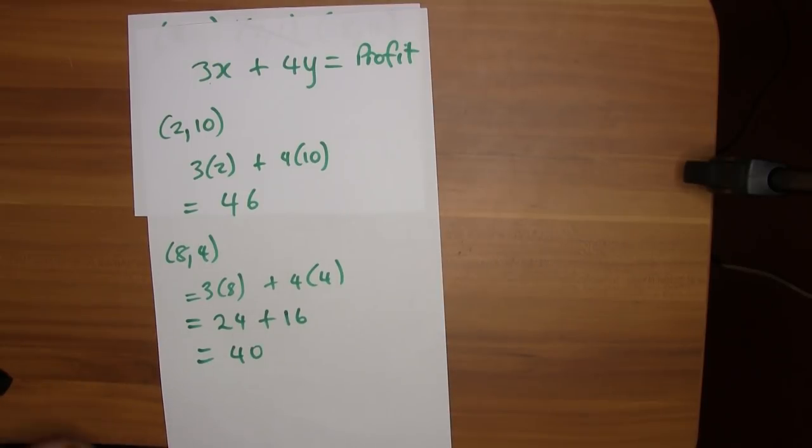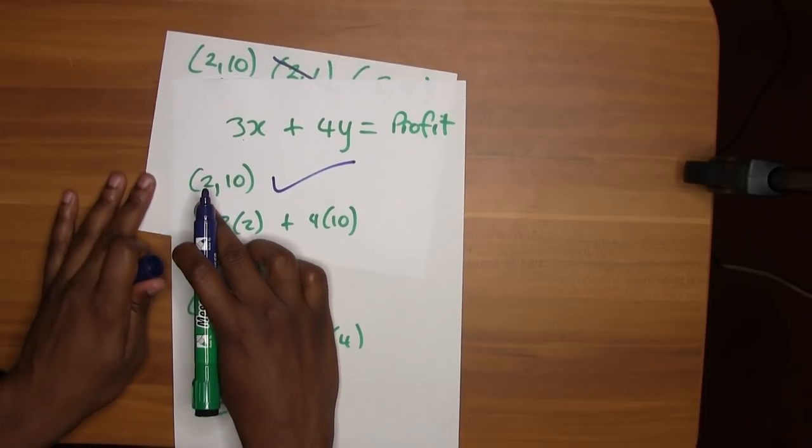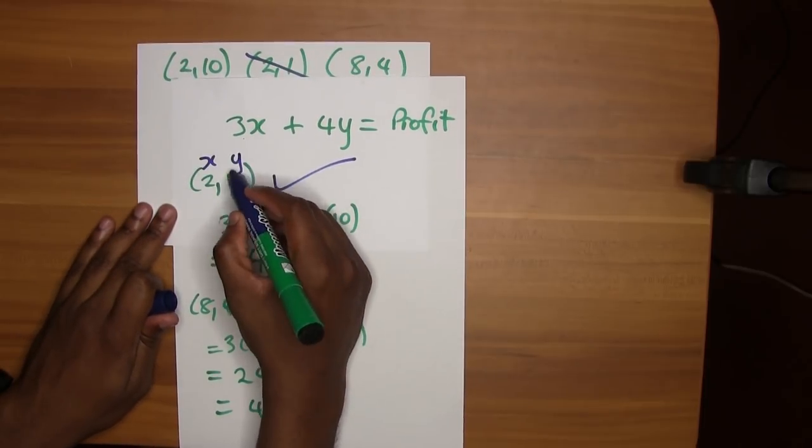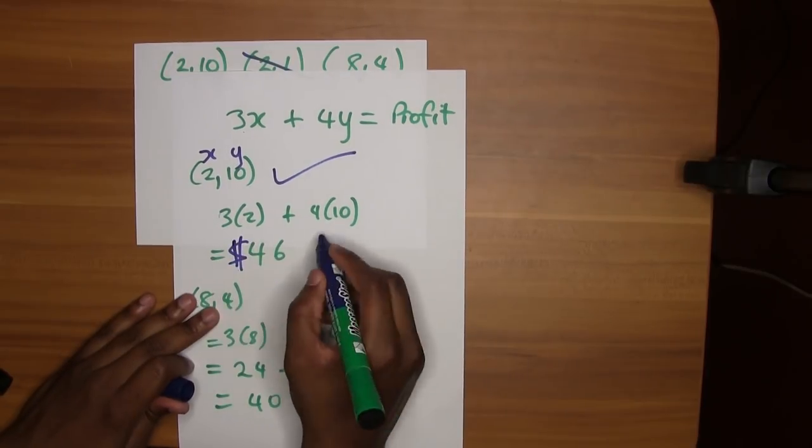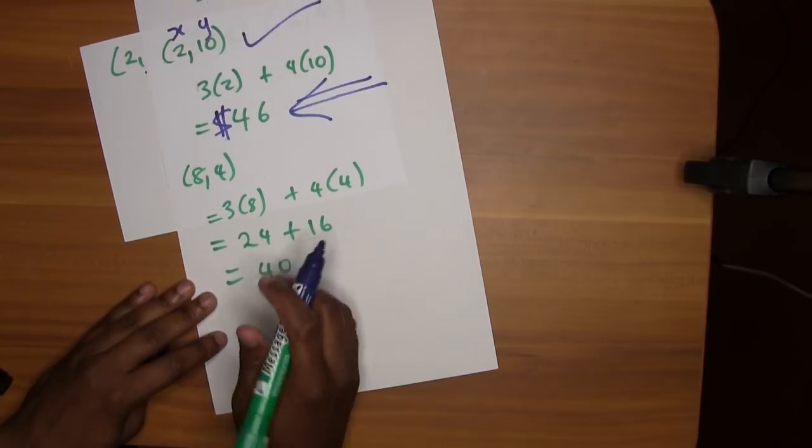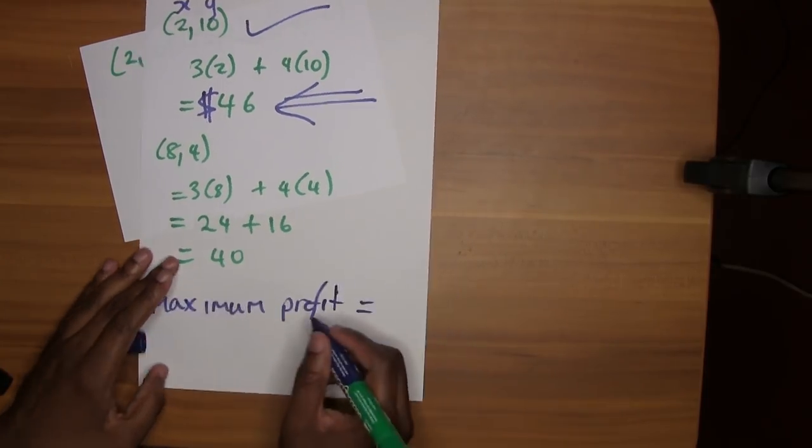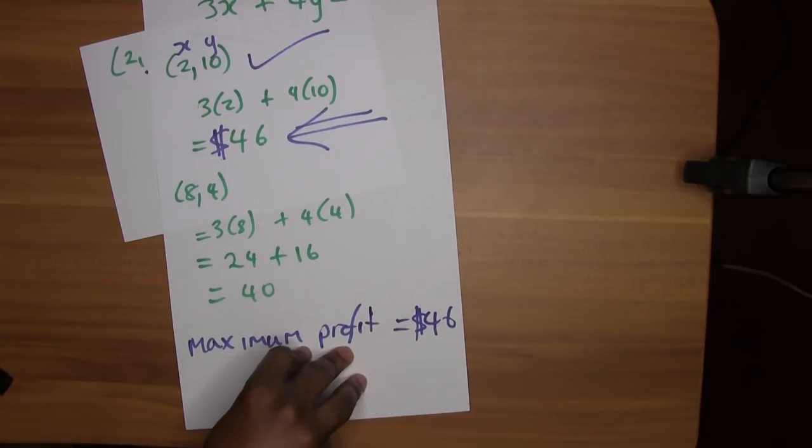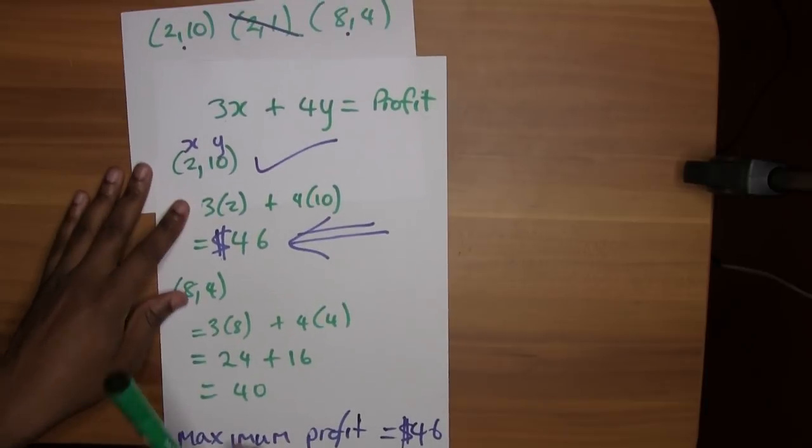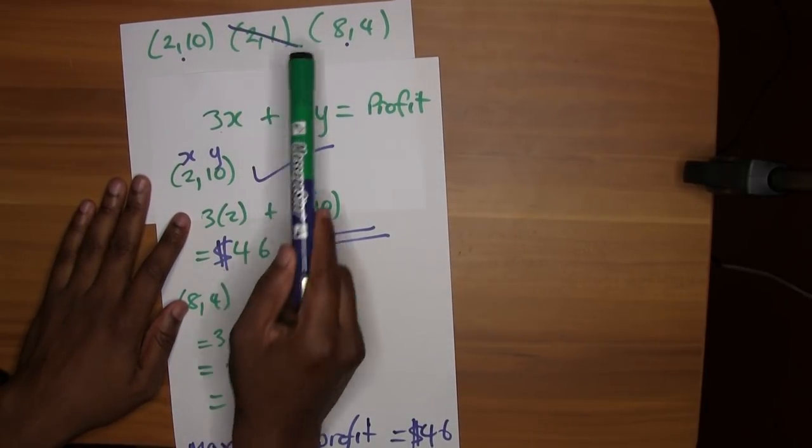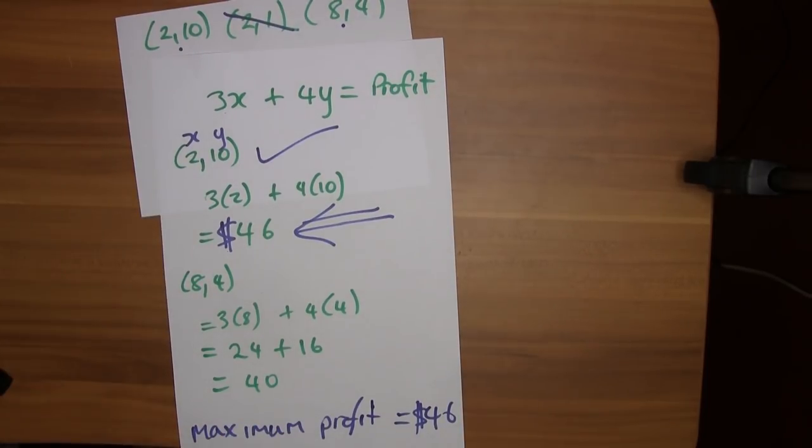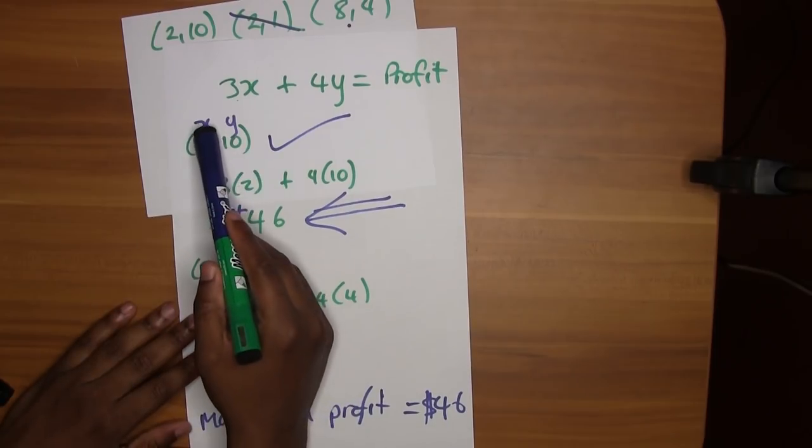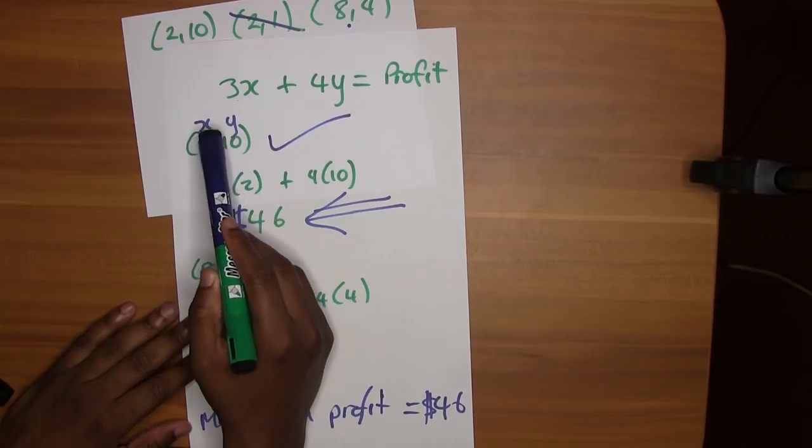So we can see here the best setup is this one where we have two roses, because x would represent roses, and 10 orchids. Maximum profit will be generated from this. So you just write that here, maximum profit equals 46 dollars. I'm seeing that this is three marks in the exam, so a lot of marks come from working on this. I wouldn't have crossed out this point, I would have showed this point substituted doesn't generate as much as well, just to make sure I don't lose out any of those beautiful three marks.